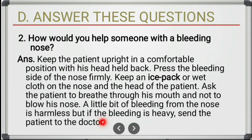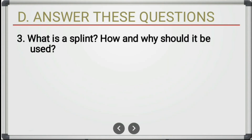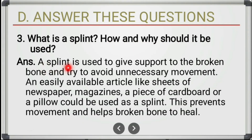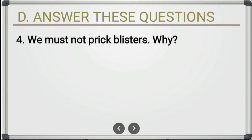Third long answer: what is a splint and how and why should it be used? A splint is used to give support to a broken bone and to avoid unnecessary movement. An easily available article like sheets of newspaper, a magazine, a piece of cardboard, or a pillow could be used as a splint. This prevents movement and helps the broken bone to heal.